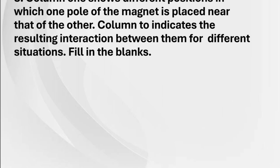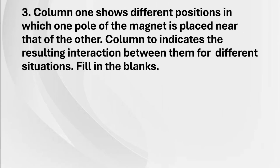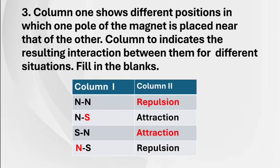Third main: column one shows different positions in which one pole of the magnet is placed near that of the other. Column two indicates the resulting interactions. Fill in the blanks: N-N — repulsion; N-S (North-South) — attraction; S-N (South-North) — attraction; S-S (South-South) — repulsion. N and S again — attraction.